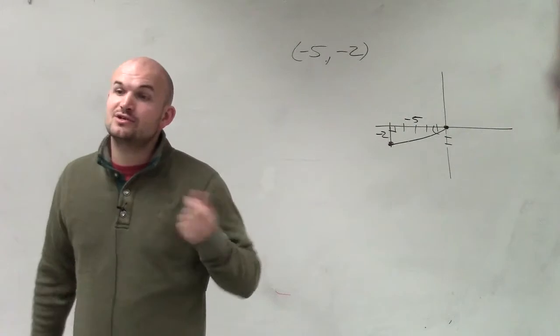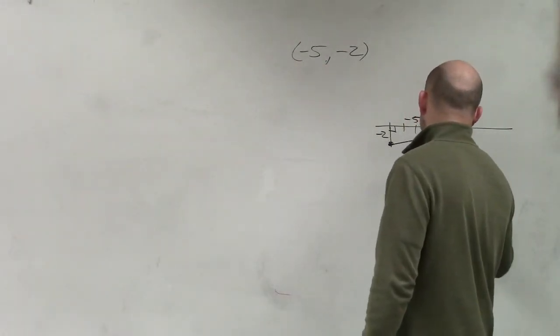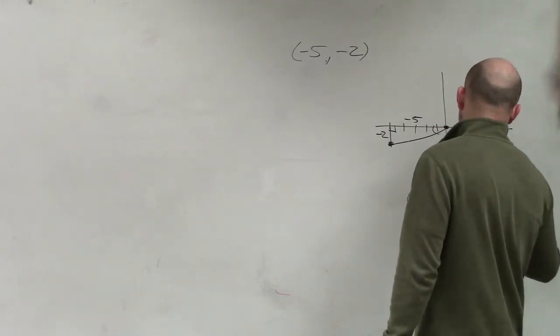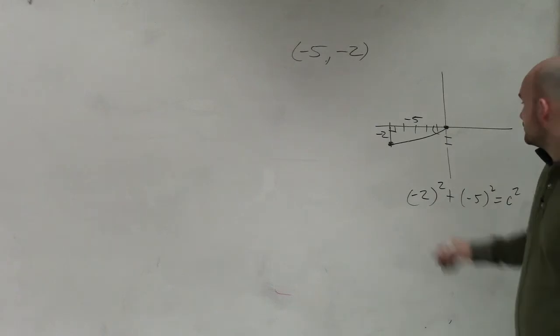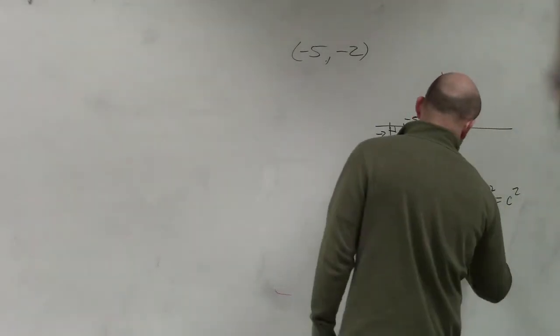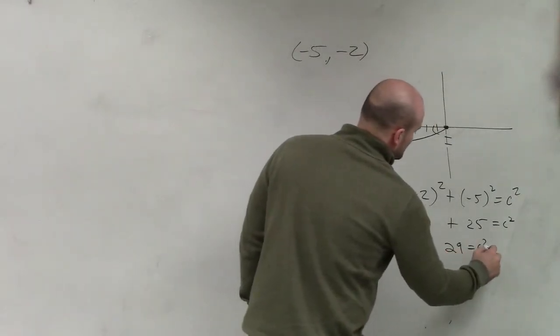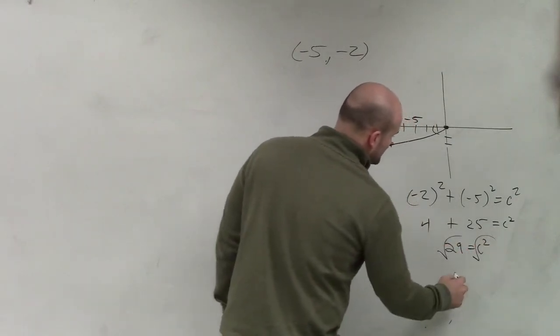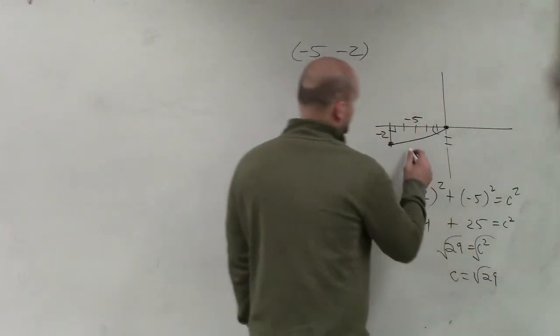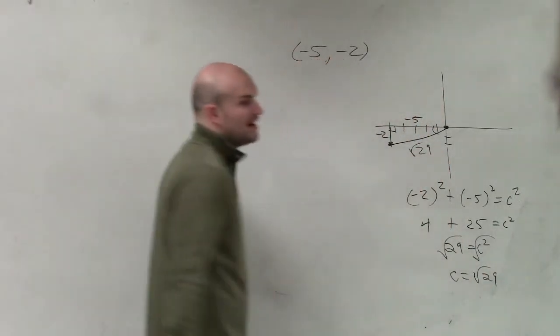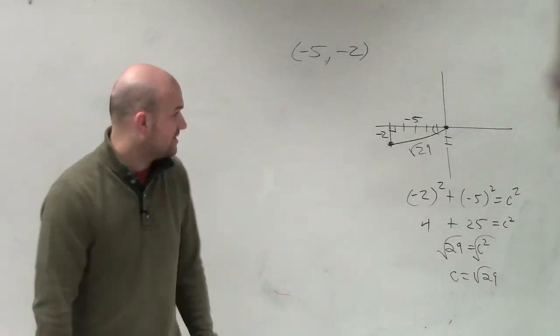Now, the only thing we need to do is figure out what our hypotenuse is. So I'll just apply the Pythagorean theorem. So negative 2 squared plus negative 5 squared equals c squared. I'll call our hypotenuse c. So therefore, that's 4 plus 25 equals c squared. 29 equals c squared. Square root, square root. C equals square root of 29. Remember, our hypotenuse is always going to be a positive length.